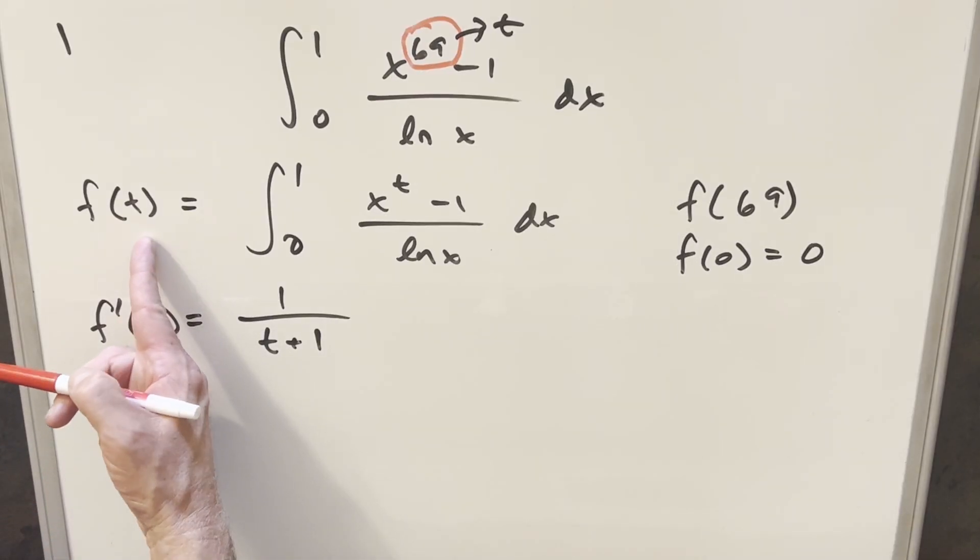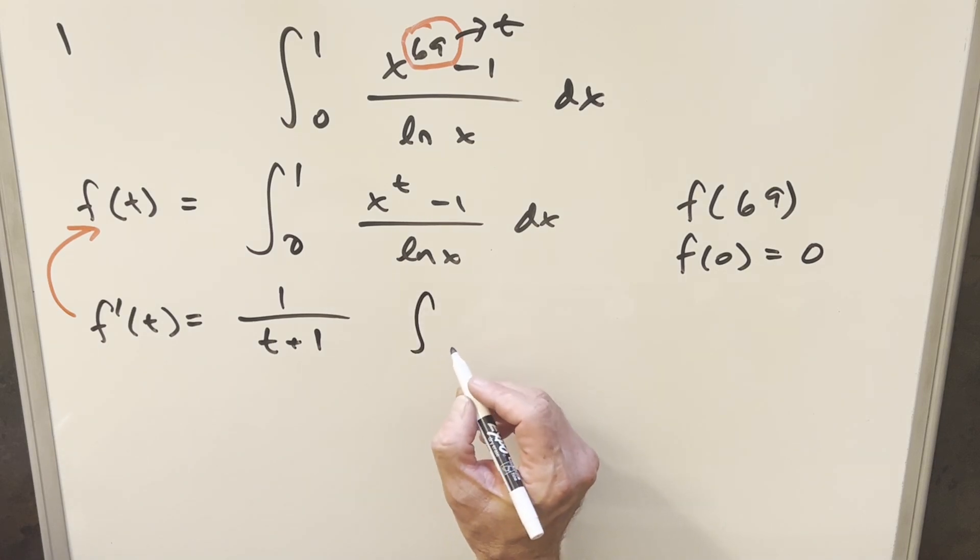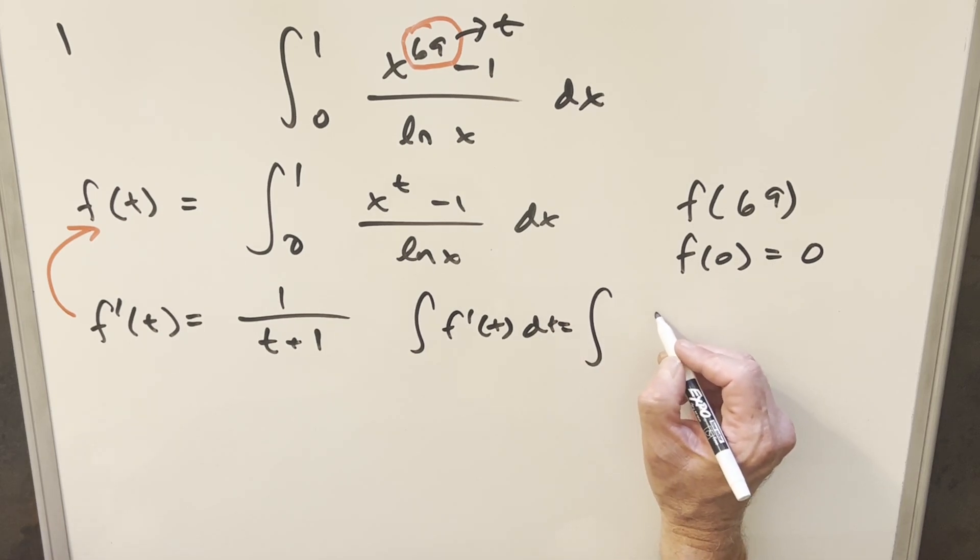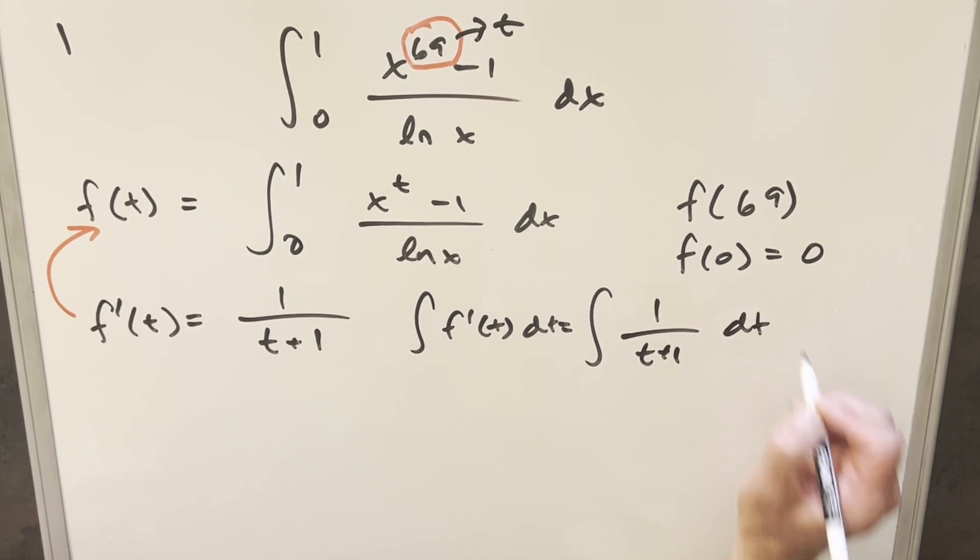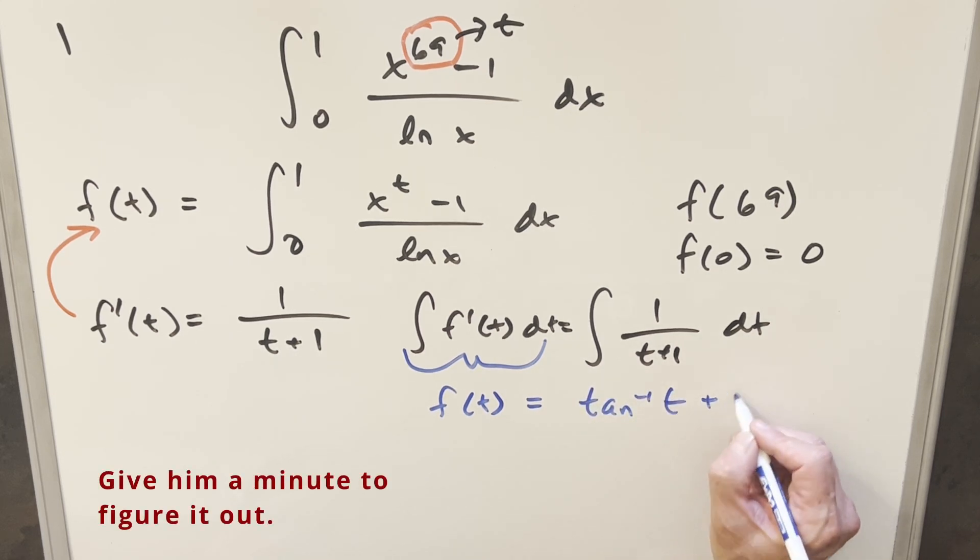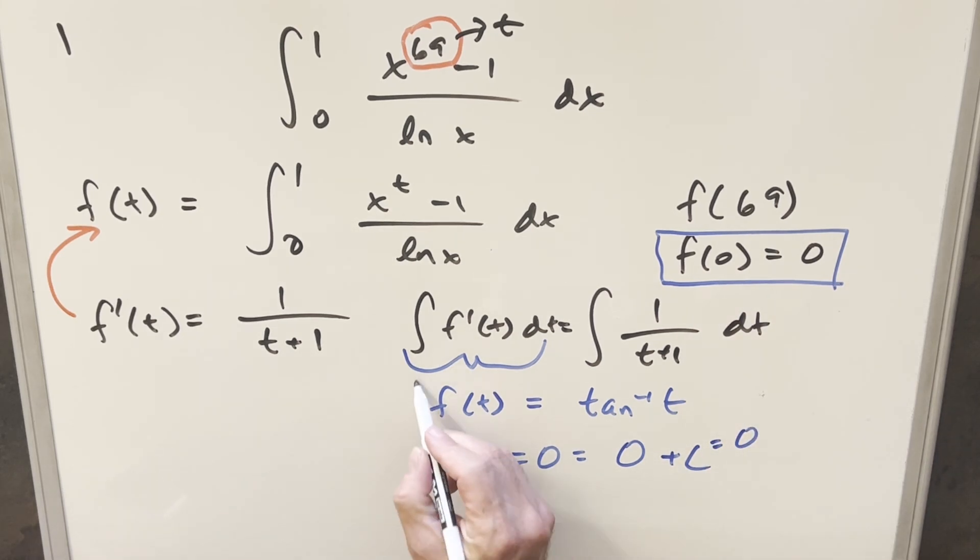And now at this point, we just have to kind of recall our goal. We want to get this back to f of t and eventually back to our solution. So in order to get back to f of t, we'll just take the integral on both sides. So we'll take here the integral of f prime of t dt. And so that's just going to be the integral of 1 over t plus 1 dt. Just doing this, this here, this is going to be our value for f of t. And integrating this, this is just going to be arctan of t plus c.